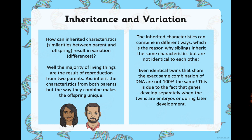So, inheritance and variation. How can inherited characteristics — similarities between parent and offspring — result in variation or differences? The majority of living things are the result of reproduction from two parents. You inherit characteristics from both parents, but the way they combine makes the offspring unique. What would not happen is you wouldn't have the top half of your body looking like your mum and the bottom part looking like your dad — that's not how inherited characteristics work. You inherit from both, but they combine in a way that makes you unique.